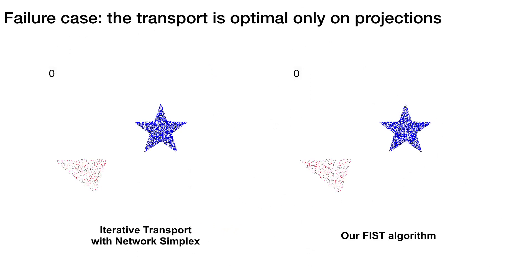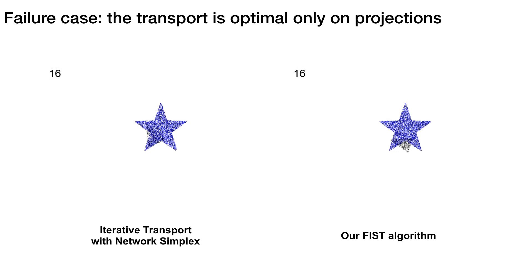Here, we show a failure case due to transport being optimal per slice and not in two dimensions. Full-fledged optimal transport solves this issue, but is intractable.